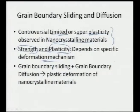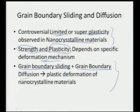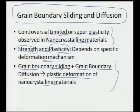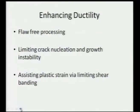One needs to know exactly what sort of mechanism is predominant when certain processing or deformation is being done. The overall plasticity or strength which results depends very much on which deformation mechanism is predominant. One very convincing theory is that grain boundary sliding plus grain boundary diffusion leads to the plastic deformation of nanocrystalline materials.